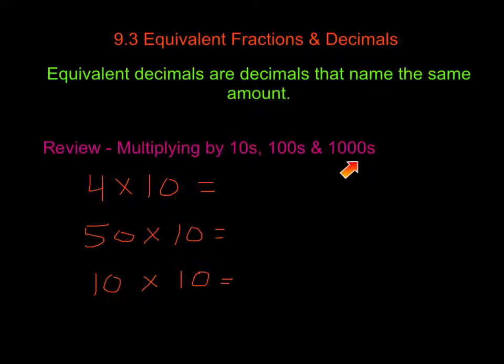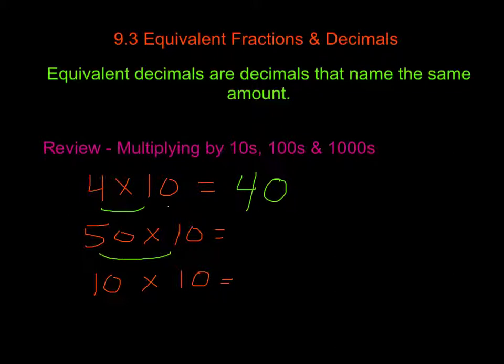So 4 times 10 — I can take our 4, because 1 times 4 is 4, and I can add 1 zero because I'm multiplying with 10, which gives me 40. With 50 times 10, I can do the same thing: 1 times 5 is 5, and then I have 2 zeros, so I'm going to put in 2 zeros, giving 500.